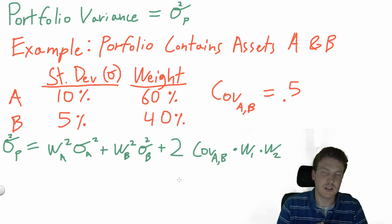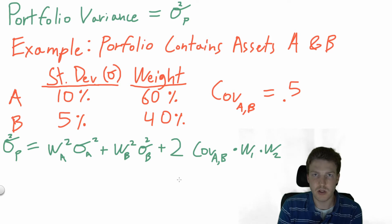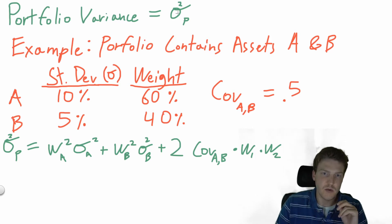Now that we've talked about how to calculate expected return, we need to focus on how we can calculate the portfolio's risk. Typically, portfolio risk is measured with the portfolio variance, or standard deviation, denoted by this sigma P. Variance is just the standard deviation squared.